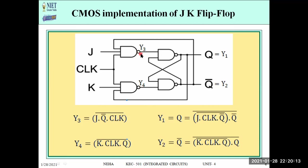Let us calculate y3 first. y3 is a NAND operation of 3 inputs: J, clock, and the feedback which is Q̄. So y3 = NAND(J, clock, Q̄), which equals the complement of (J · clock · Q̄). So y3 = overline{J · Q̄ · clock}.